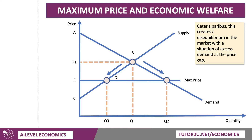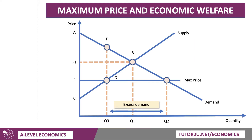I've now just called the maximum price point E. So at that maximum price, we have excess demand in the market — there's a shortage created by the maximum price. Let's think about what the consequences are for consumer surplus. The key quantity here is Q3. Welfare depends on the quantity actually consumed. It was Q1 before the maximum price; it's now fallen to Q3. So that's the really key output.